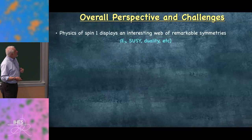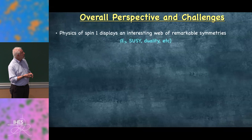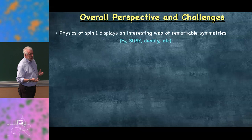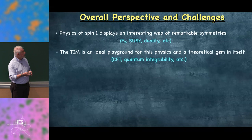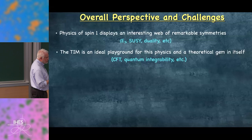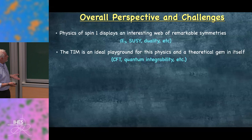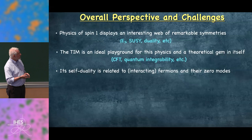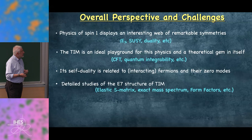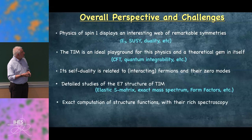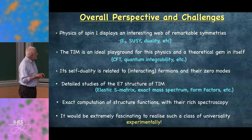In summary, I discussed the physics of spin-1 systems, which display more remarkable symmetries than the Ising model — in particular E7, supersymmetry, and duality. The tricritical Ising model is an ideal playground for this physics and a theoretical gem in itself, allowing exact computation via quantum integrability, conformal field theory, form factors, and so on. The self-duality is related to interacting fermions and their zero modes. The detailed E7 structure gives the exact elastic S-matrix, exact mass spectrum, form factors, and the structure function. It will be extremely fascinating to realize such a class of universality experimentally — but so far, it remains an open challenge.